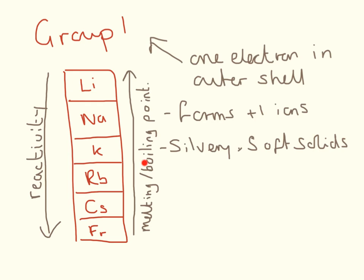Conversely, the melting and boiling points increase as you go up the group. So things at the top of the group have a really high melting and boiling point, whereas things at the bottom have lower melting and boiling points.